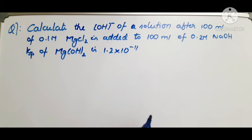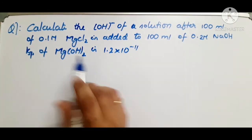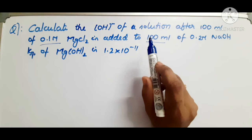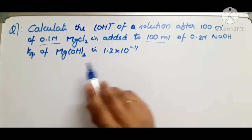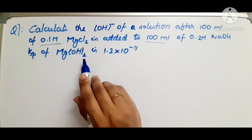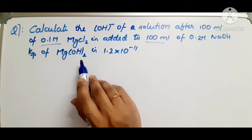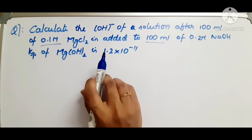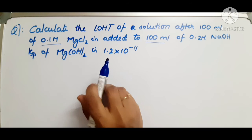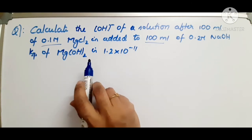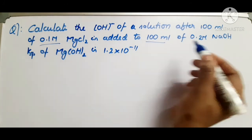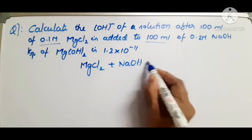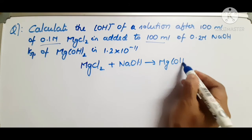Next example: calculate the OH⁻ concentration after 100 mL of 0.1 M magnesium chloride is added to 100 mL of 0.2 M sodium hydroxide. First check whether Mg(OH)₂ precipitates out. Then calculate its solubility. Check by computing the ionic product (KIP) — if KIP > Ksp, Mg(OH)₂ will precipitate. When MgCl₂ is mixed with NaOH, you get Mg(OH)₂ and 2NaCl.